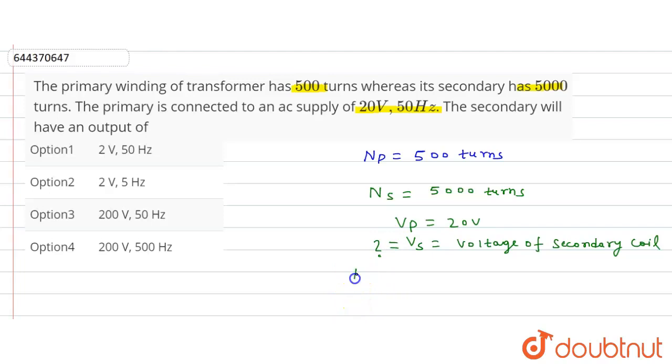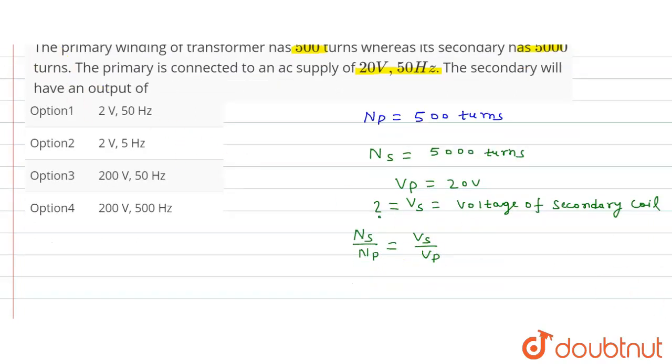So we know NS upon NP is equal to VS upon VP. So from here, NS is how much? NS is equal to 5000 upon NP, which is 500, is equal to VS we have to find, and VP is equal to 20.